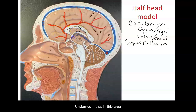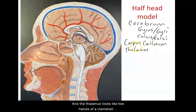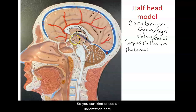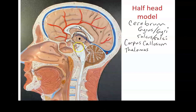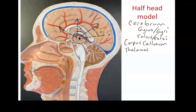This structure made of white matter is your corpus callosum, and it connects the two halves of the cerebrum. We call those two halves hemispheres. In this view I am looking at the right hemisphere. Underneath that would be the thalamus, which looks like two halves of a clamshell held together at the hinge. The thalamus is like an old-time telephone operator connecting incoming information to the different parts of the cerebrum.